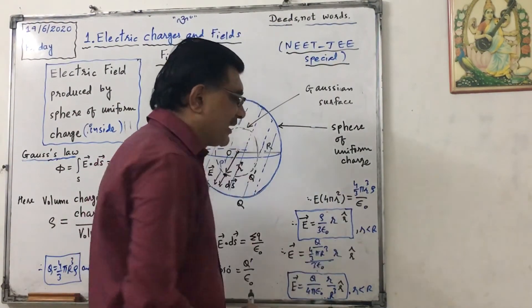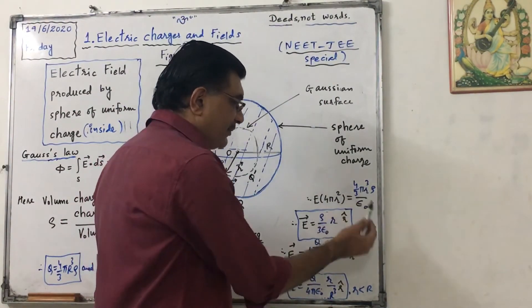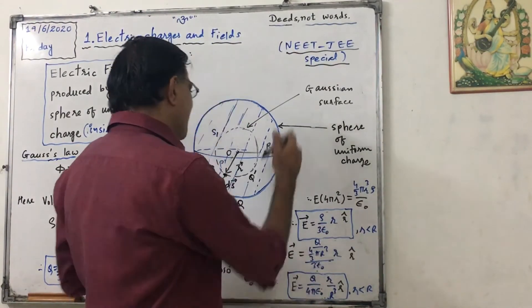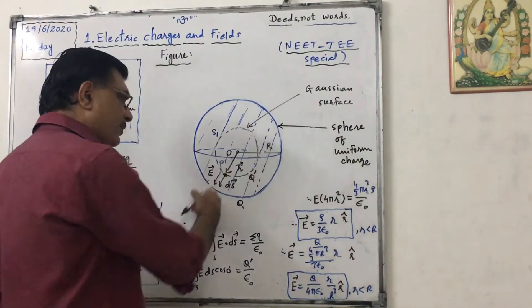So 4 pi, 4 pi will be cancelled. One r square will, one r will remain. So rho into r upon 3 epsilon naught. Direction is r cap, unit vector towards this.